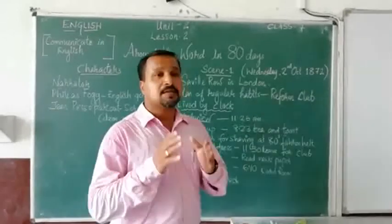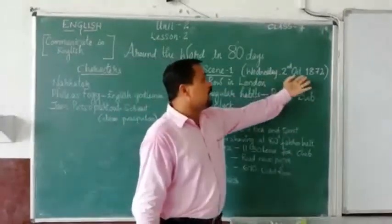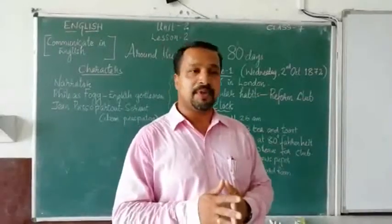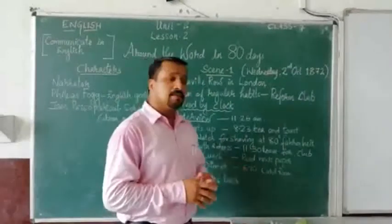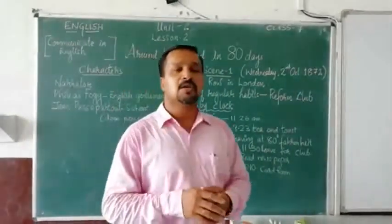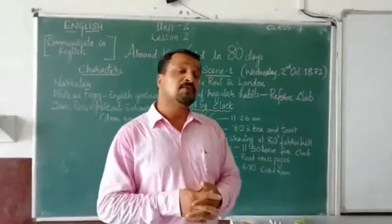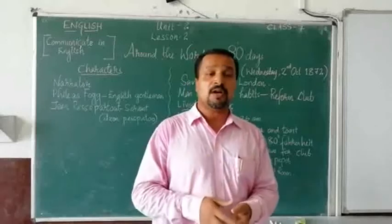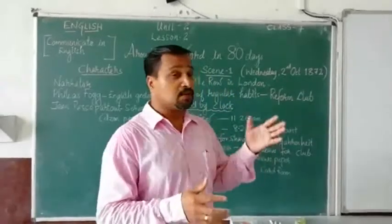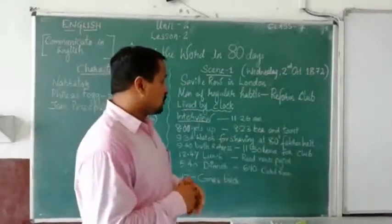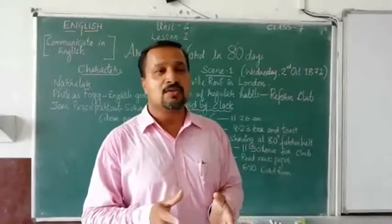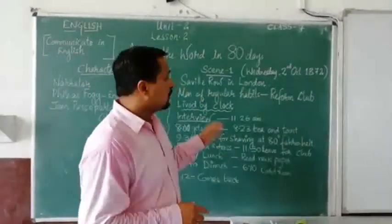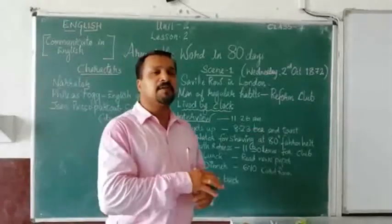But on this particular day — 2nd October 1872, Wednesday — something different happens in the city. The friends who come to play cards discuss a news item: 55,000 pounds had been robbed from a bank, and the robber appeared to look like an English gentleman, similar in appearance to Phileas Fogg. This disturbing news causes a change, and Fogg's entire routine and regularity are overturned.